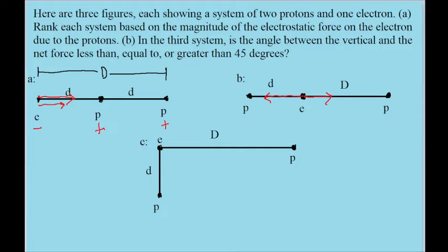Finally, let's look at situation C. The electron will again experience attractive forces towards both protons — one force to the right, towards the proton at distance D, and one force downwards towards the other proton at distance d. What I have drawn on each of the three situations are force vectors showing the directions of the force experienced by the electron.